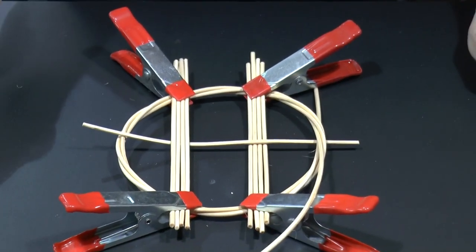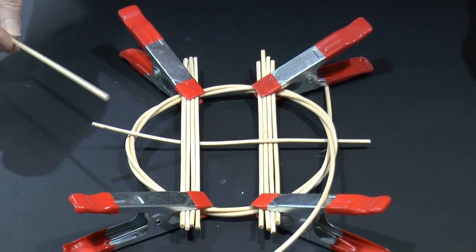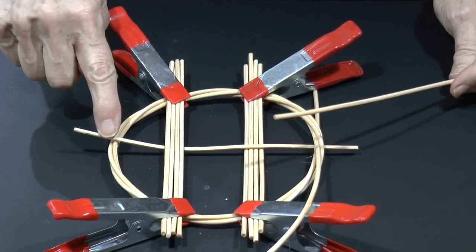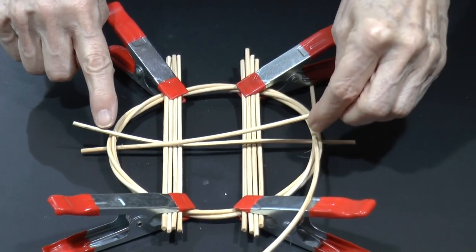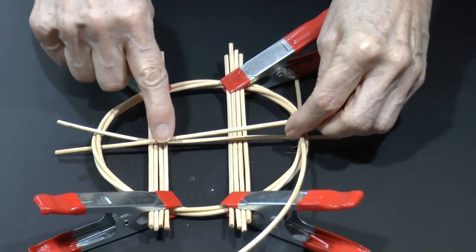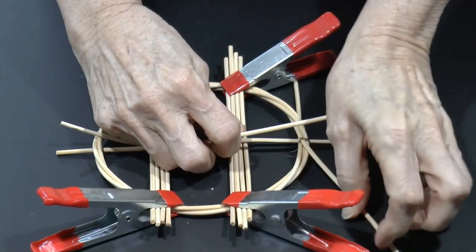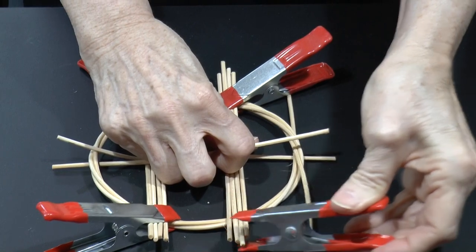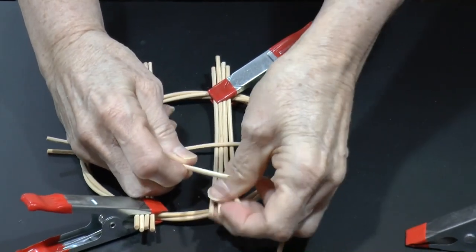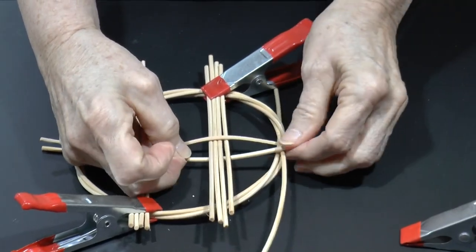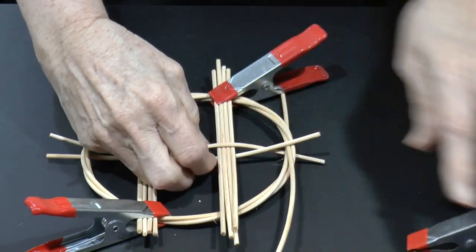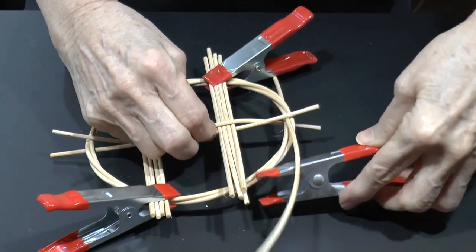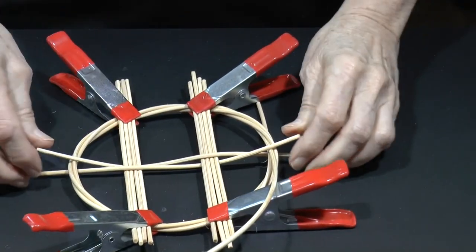Grab the second weaver, and we'll start from the side where we just ended. Since the first weaver ended on top of our ring, we'll start this one underneath. Then, working to the opposite side, we'll go over the first spoke, unclamp the second spoke, and weave underneath it, and then end up on top of the ring on the other side. We still need the clamps to hold the spokes in place.